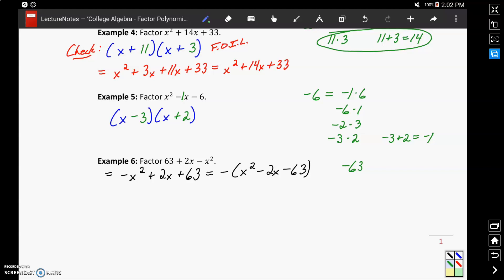So now we have negative 63 to consider, which we could get by taking negative 7 times 9 or negative 9 times 7. Negative 9 plus 7 would give us negative 2, which matches that middle coefficient, meaning we would want to go ahead and factor this as the opposite of the quantity x minus 9 times the quantity x plus 7.